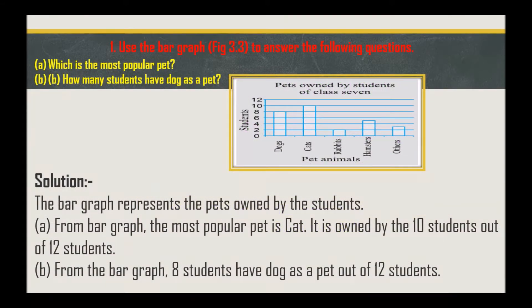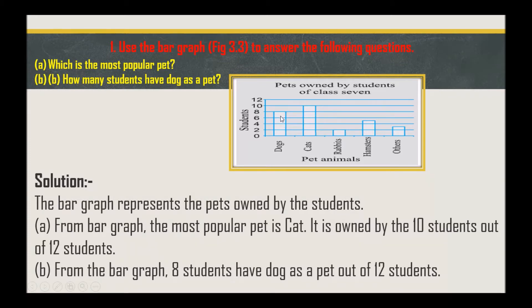The first question says: use the bar graph to answer the following questions. This bar graph is given in the textbook. The first question is: which is the most popular pet? From the bar graph, the most popular pet is cat — it is owned by 10 students out of 12. The second question is: how many students have a dog as a pet? We can see 8 students have a dog as a pet out of 12 students.